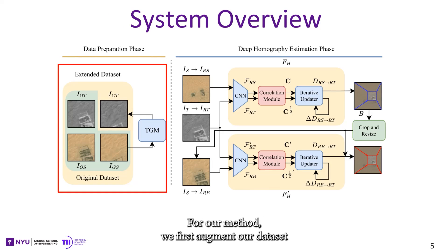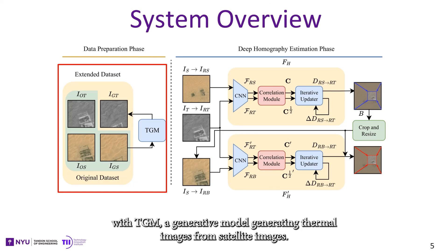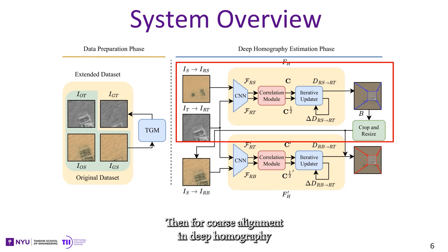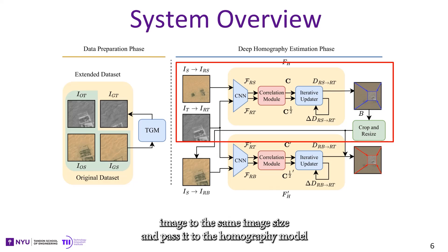For our method, we first augment our dataset with DGM, a generative model that generates thermal images from satellite images. Then for coarse alignment in deep homography estimation, we resize our thermal image and a large-scale satellite image to the same image size and pass it to the homography model. The output is the four-corner displacement indicated by the blue arrows.